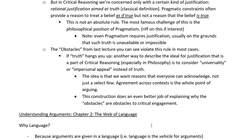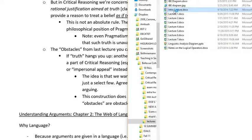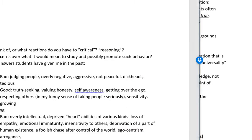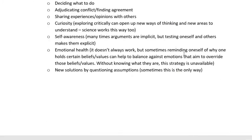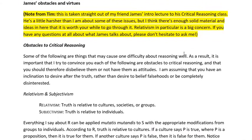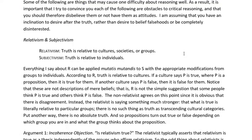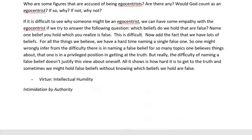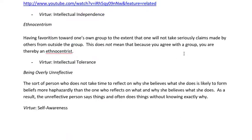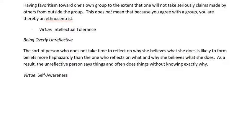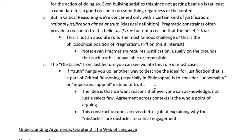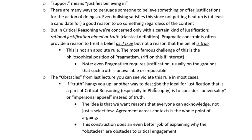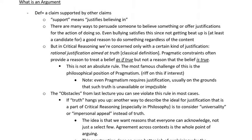The obstacles in my lecture notes are from an intro lecture from my friend James — obstacles to critical reasoning: relativism, subjectivism, egocentrism, intimidation by authority, conformism, ethnocentrism, and being overly unreflective. A lot of those things that distract us from critical reasoning are really making a confusion between something that motivates me to accept a belief and something that actually contributes to a proof of that claim.